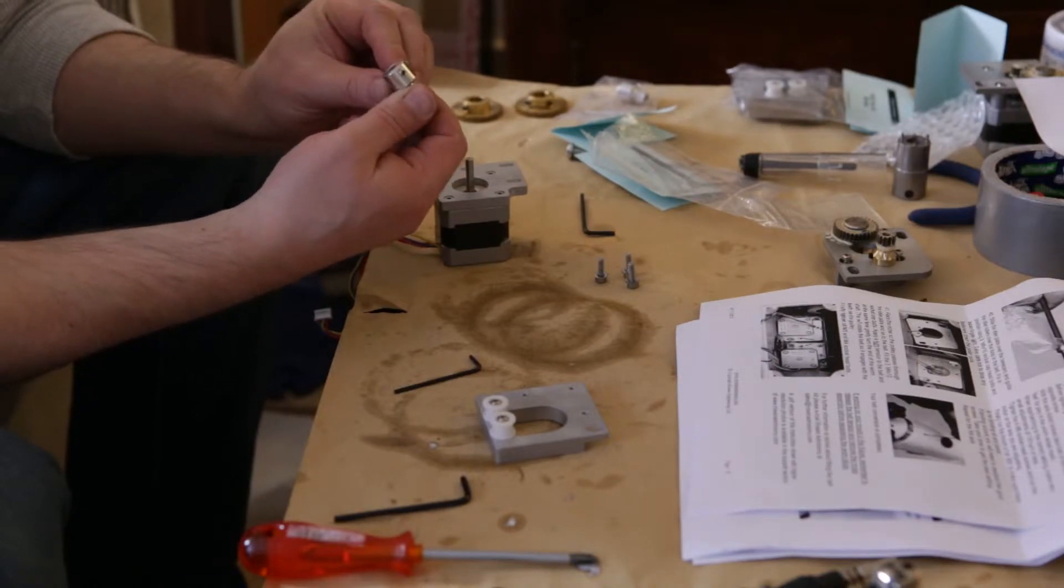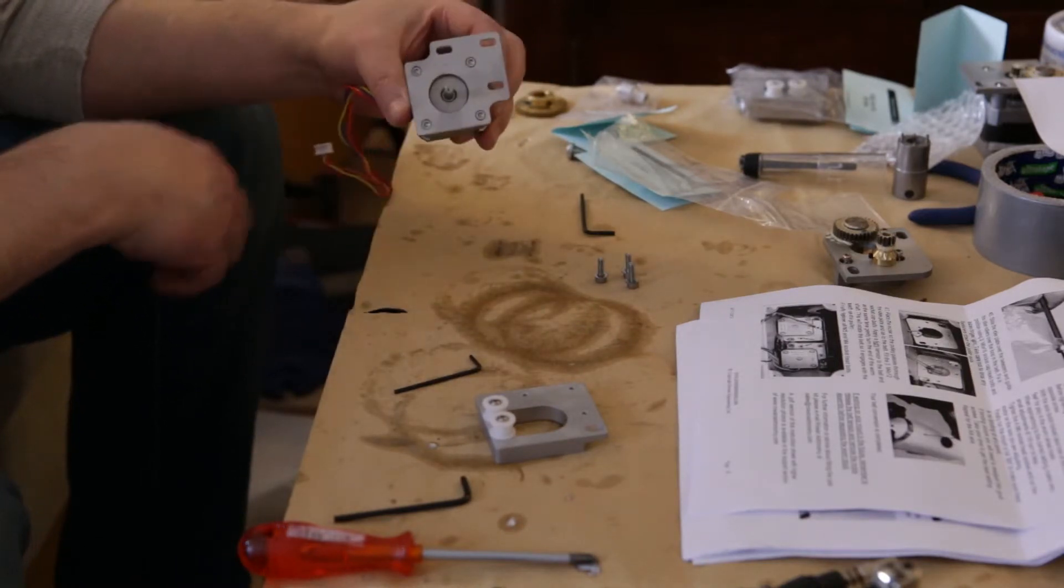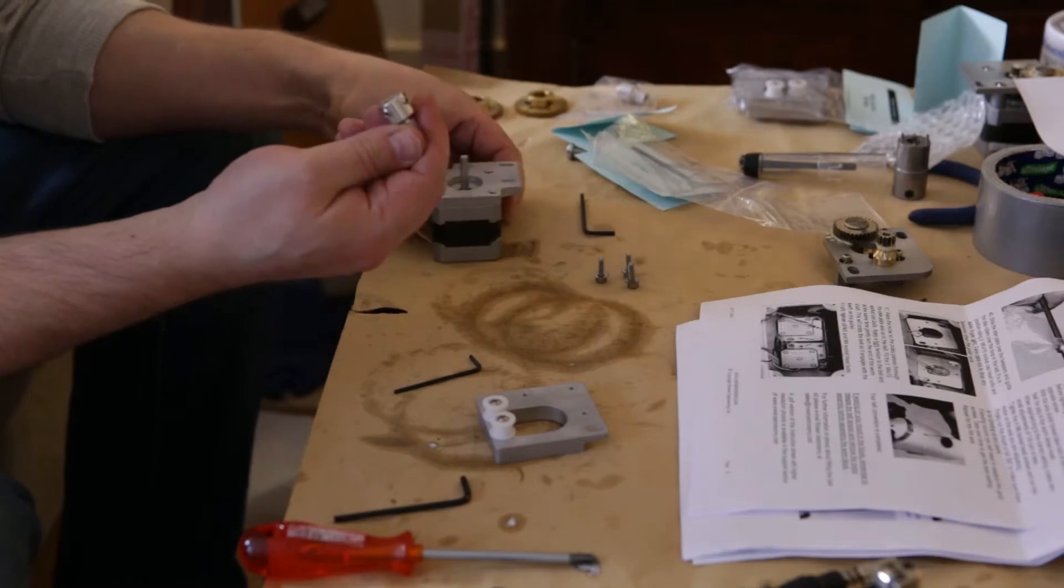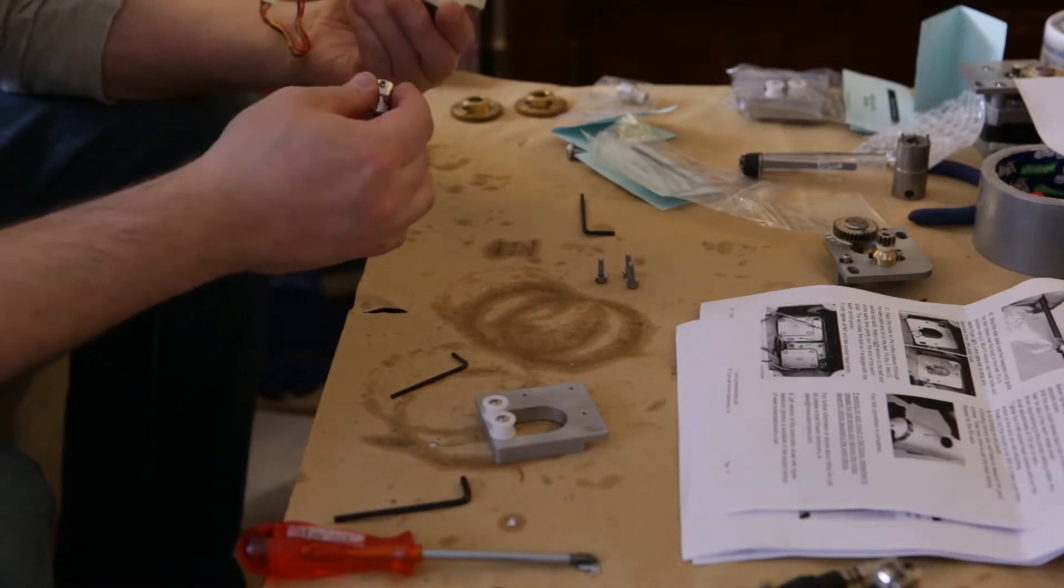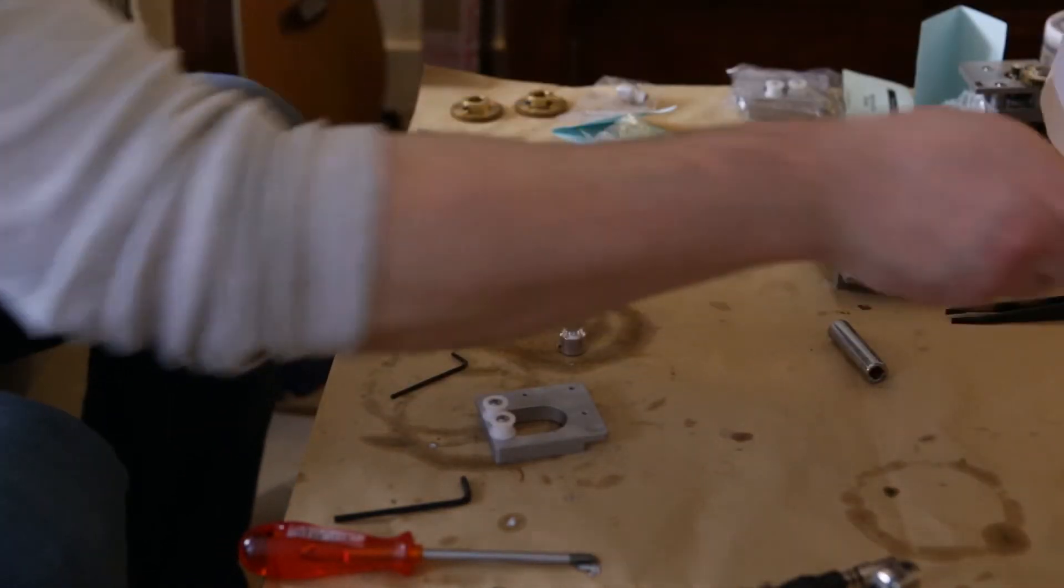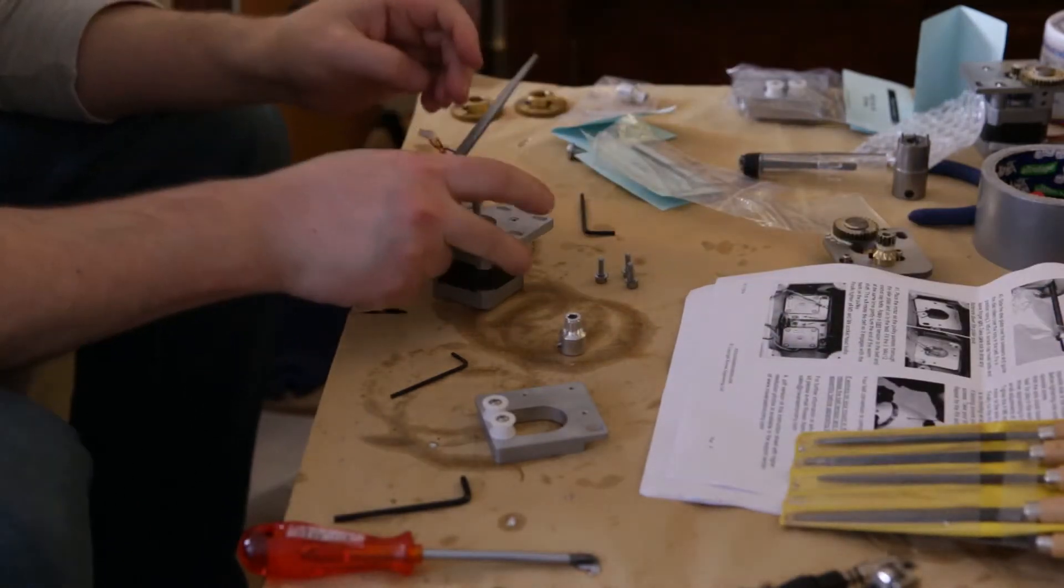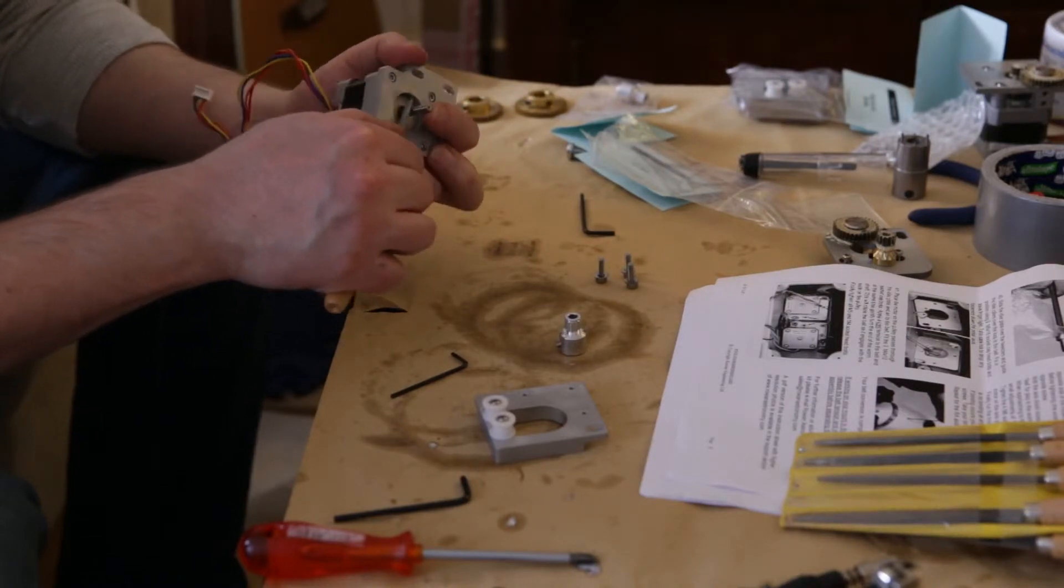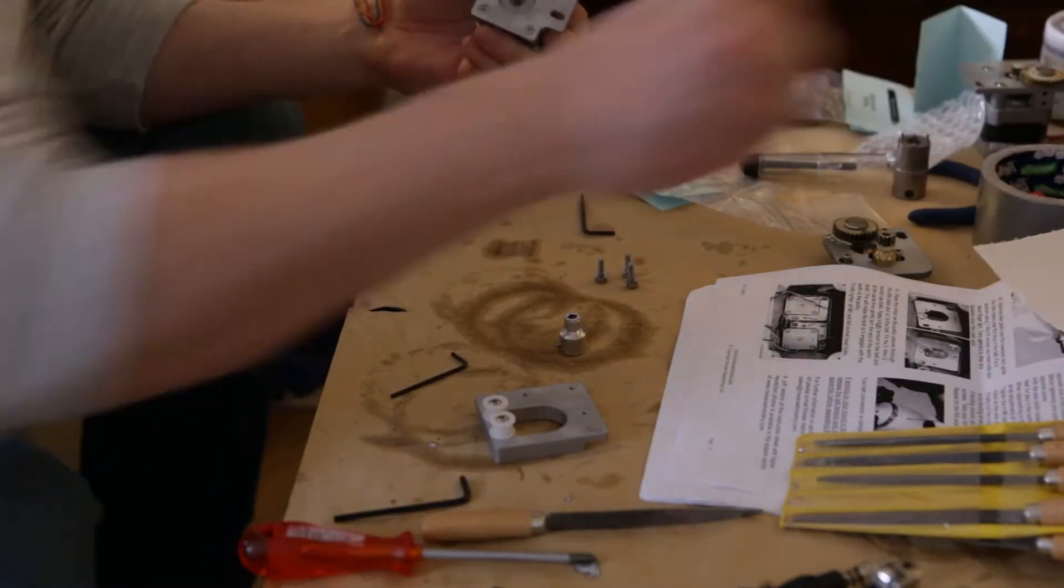And the grub screws seem to be the same length, so it doesn't really matter which one of the grub screws you align with the flat piece of the shaft. Okay, it looks like I'm going to have to file those dents a little using a needle file. Let's try again.